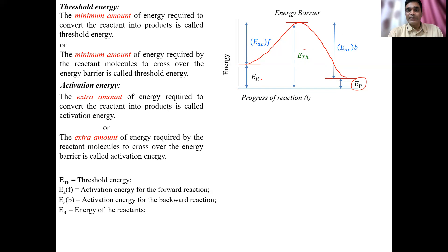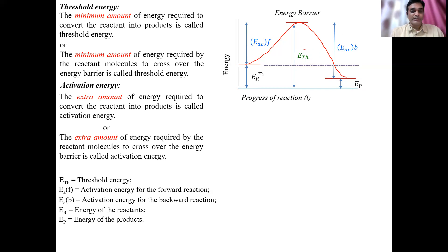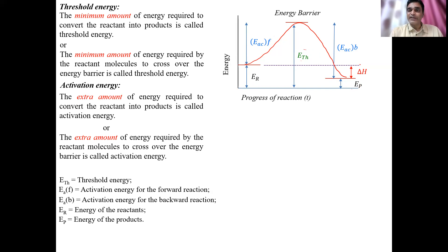Let's look at the key relations. First: energy of reactant E_R, second: energy of product E_P. The dotted lines show the energy of reactant and product. The gap between the energy of the product and the energy of the reactant is called delta H — the enthalpy change.